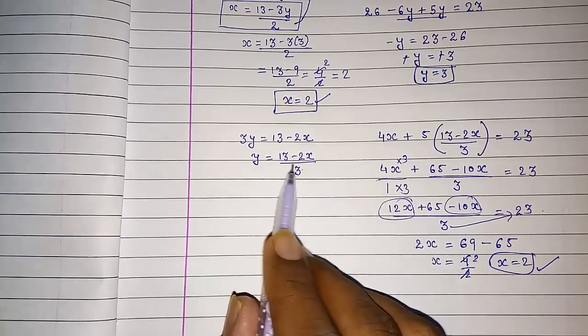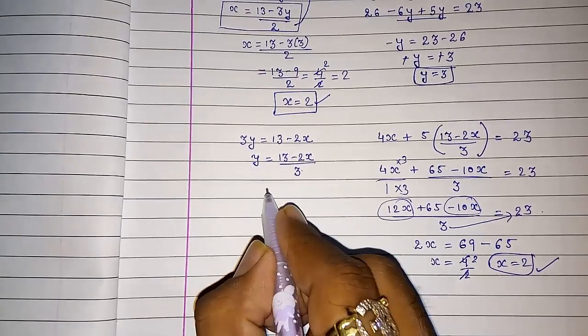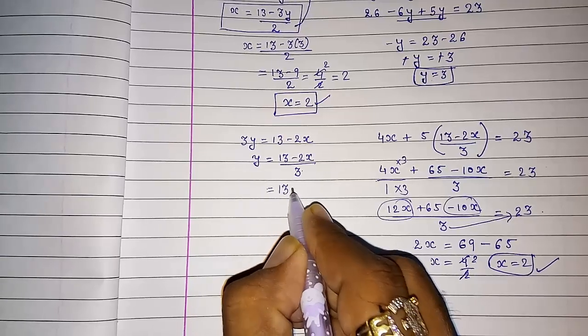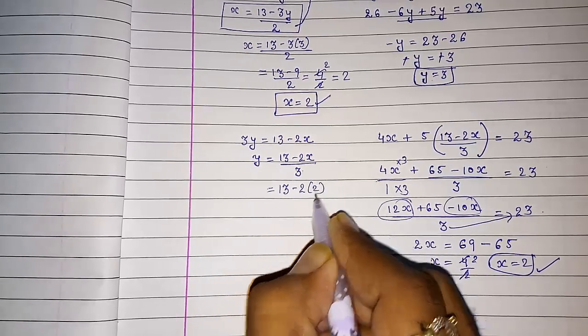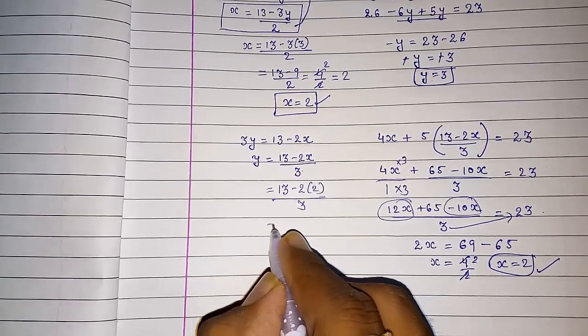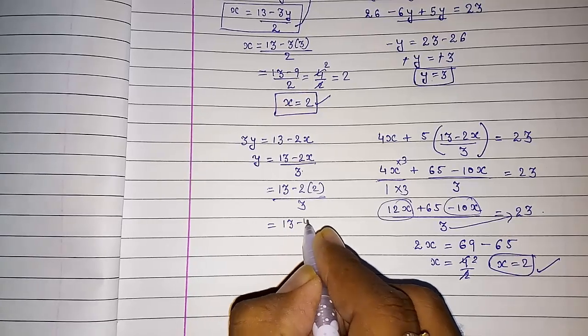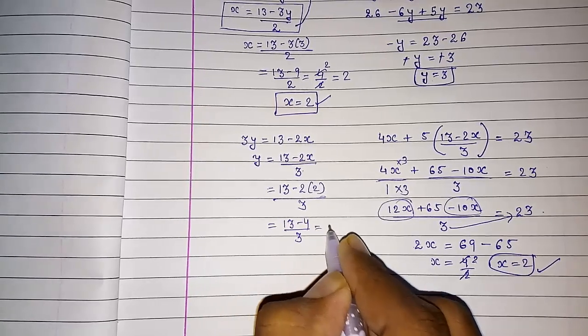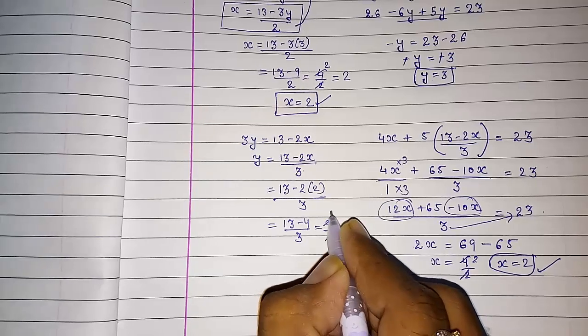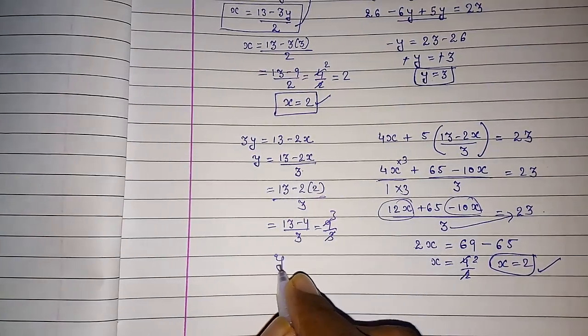Now we will substitute this x value here. y = (13 - 2 × 2) / 3 = (13 - 4) / 3 = 9 / 3 = 3. So y = 3.